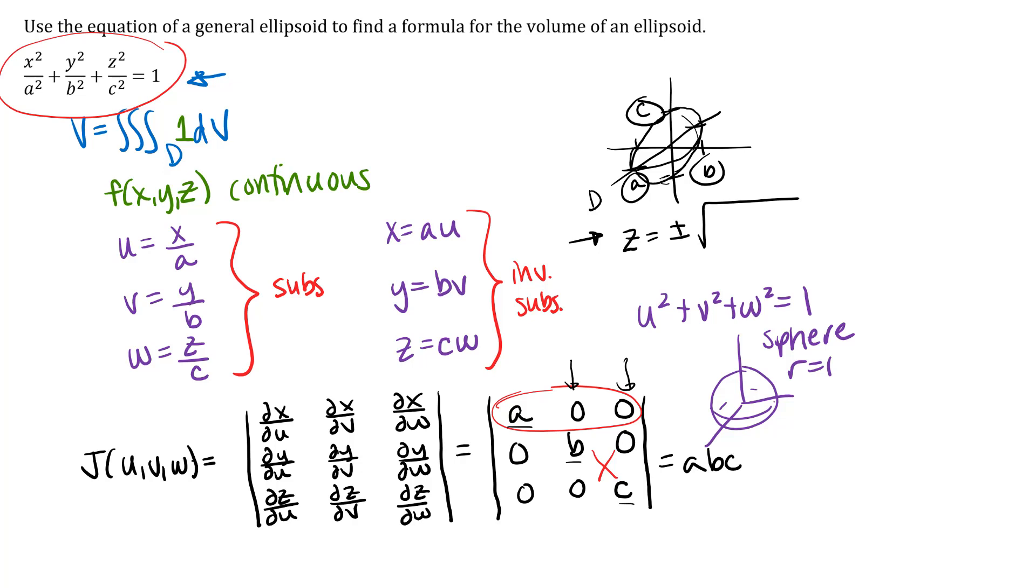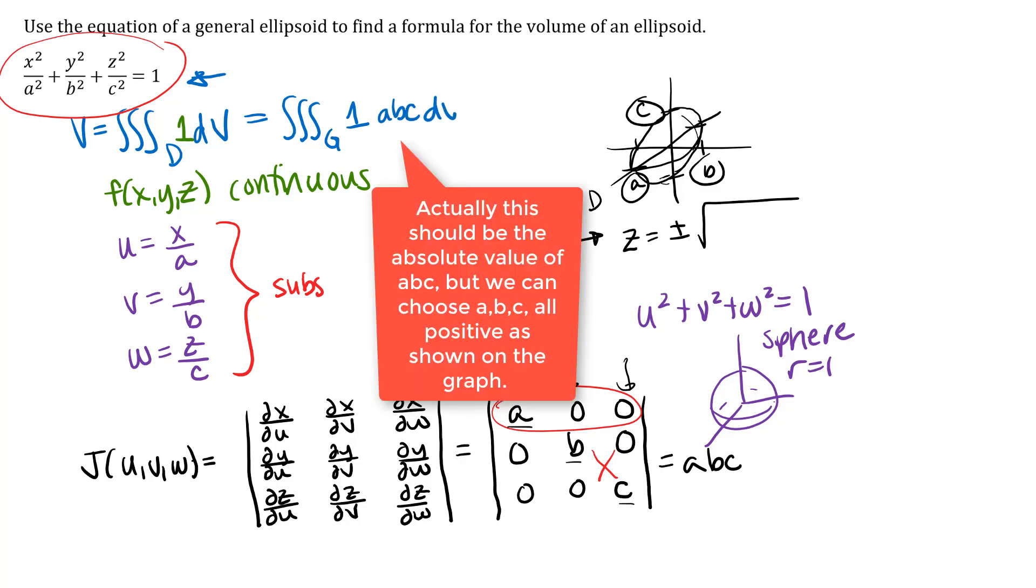I'll just go back up here to the top and do that. Transform our triple integral to a new triple integral over our region g in u, v, w space. My function that I'm integrating is 1. I need my determinant dV.